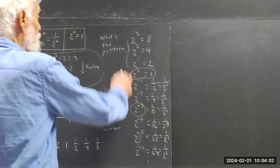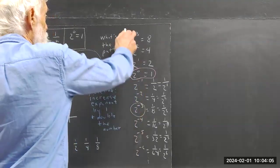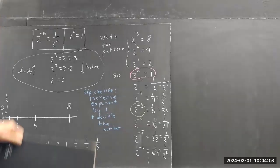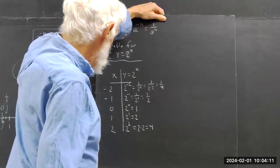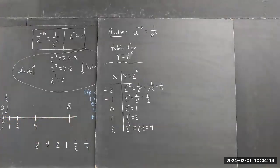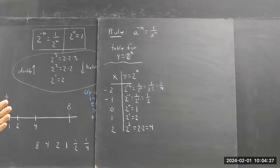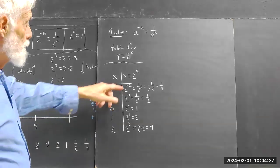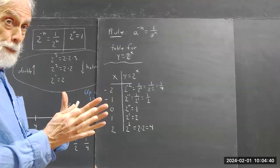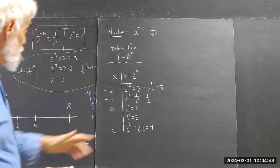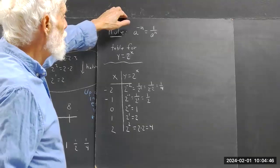If x is negative 2, we write 2 to the negative 2, which is 1 over 2 squared — 1 over 2 times 2 — which is one fourth. We could extend this table as far as we want because the pattern is the powers of 2. These numbers converge down towards 0; your negative exponents give you smaller and smaller numbers, but they're always positive — always bigger than 0.